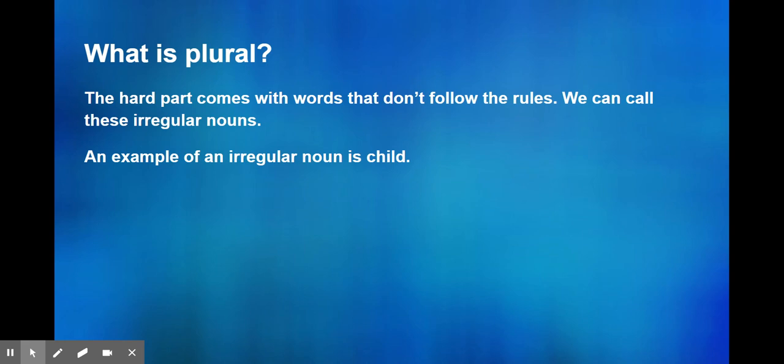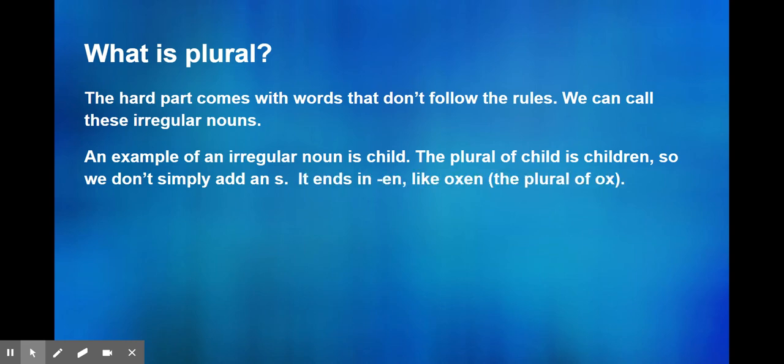An example of an irregular noun is child. The plural of child is children, not child's, so we don't simply add an S. We add an EN, like oxen, which is the plural of ox, and there's no specific rule for that. These are just exceptions.